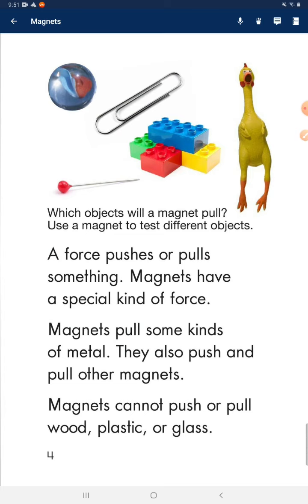A force pushes or pulls something. Magnets have a special kind of force. Magnets pull some kinds of metal. They also push and pull other magnets. Magnets cannot push or pull wood, plastic, or glass.